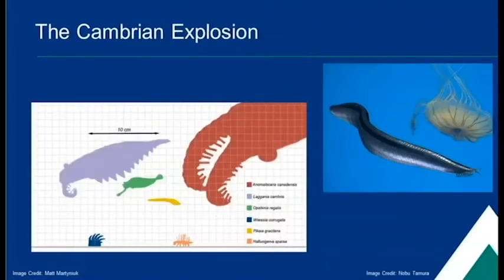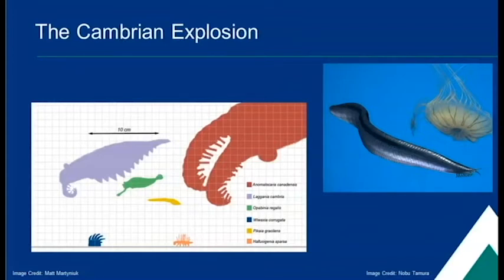Some creatures seen in the Burgess Shale include the Anomalocaris, the Lagania, the Opabinia, the Wiwaxa, the Pikaia, and the Hallucigenia, as you can see in this diagram showing size comparisons on the left. A picture of a Pikaia is also shown on the right.